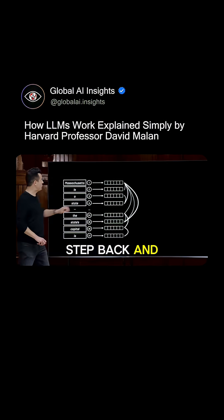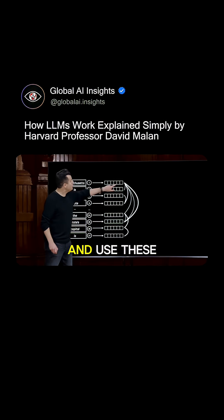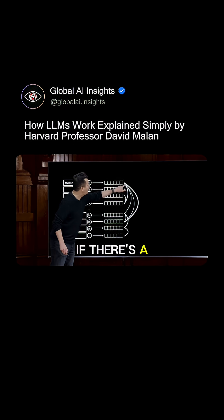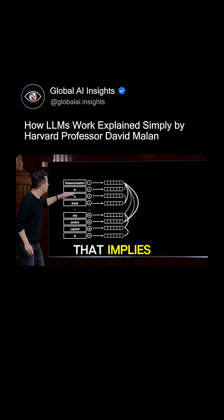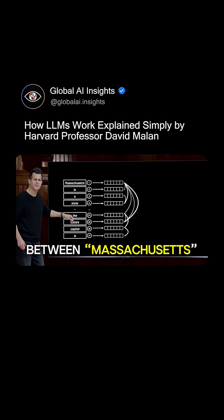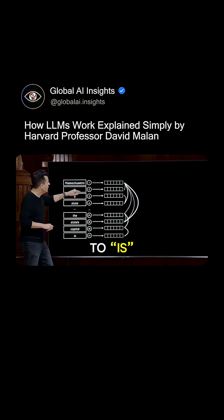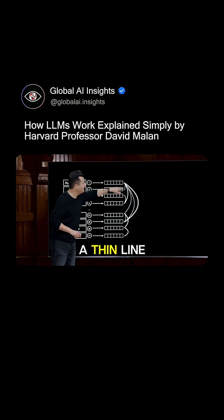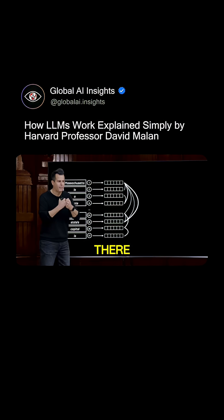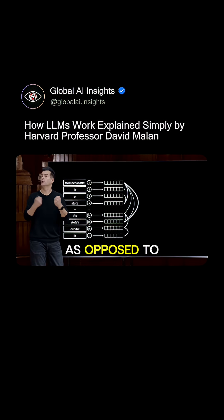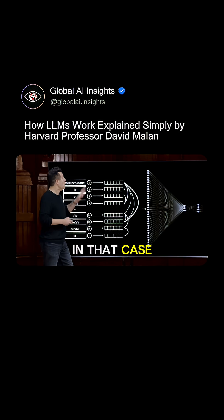Let's take a step back and abstract it away as little rectangles, and use edges to imply relationships — if there's a bolder edge, that implies there's a strong relationship in the training data between Massachusetts and state. One of those words is giving more attention to the other, as opposed to a thin line between Massachusetts and is, because there's not much going on between those two — as opposed to those two nouns.